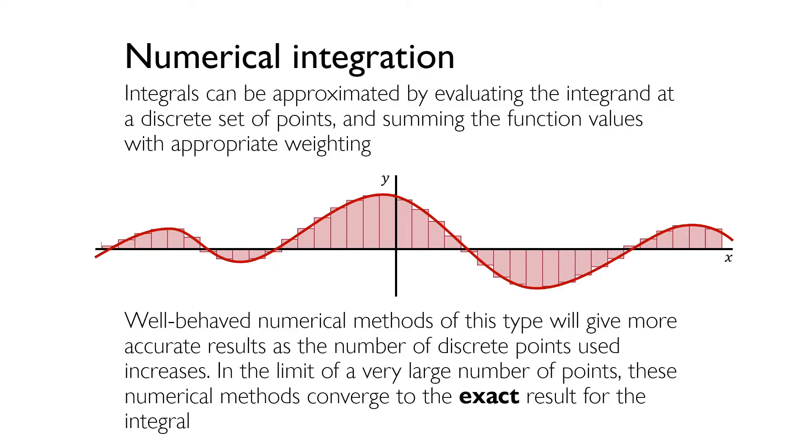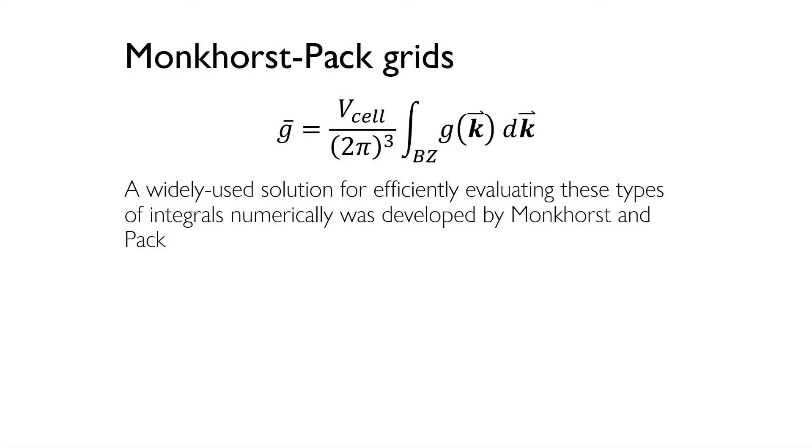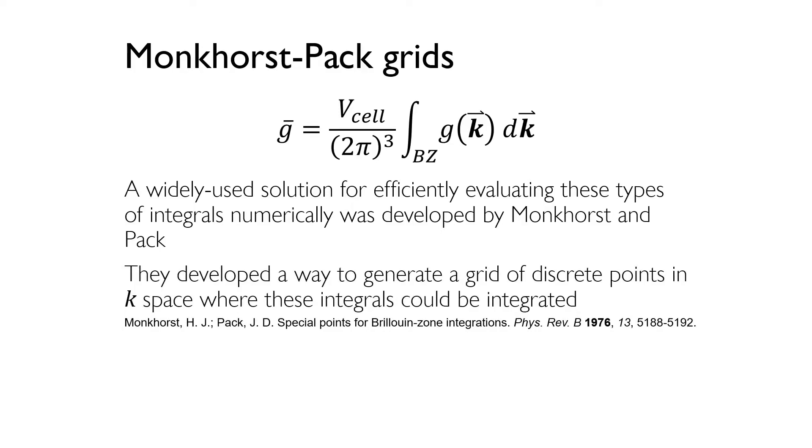There are different methods for approximating the area beneath the curve that converge to the true value of the integral faster than using rectangles. Examples of such methods are the trapezoidal method or, even faster, Legendre quadrature method. We now return to the integrals being solved by the computer during a DFT calculation. It's important to have an efficient, yet still accurate way to numerically approximate these integrals. A widely used method to do this was developed by Monkhorst and Pack in the 1970s. They came up with a way of generating a grid of discrete points in k-space at which the integrals could be evaluated. This grid of k-points is termed the k-point mesh. To use their method, all you need to do is specify how many k-points will be used along each direction in reciprocal space.